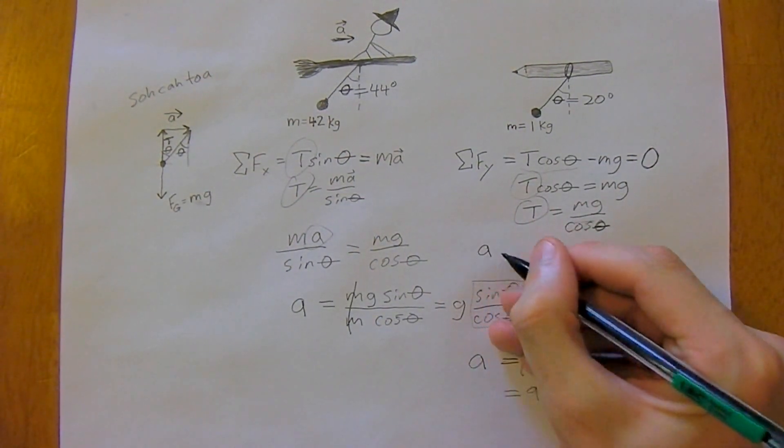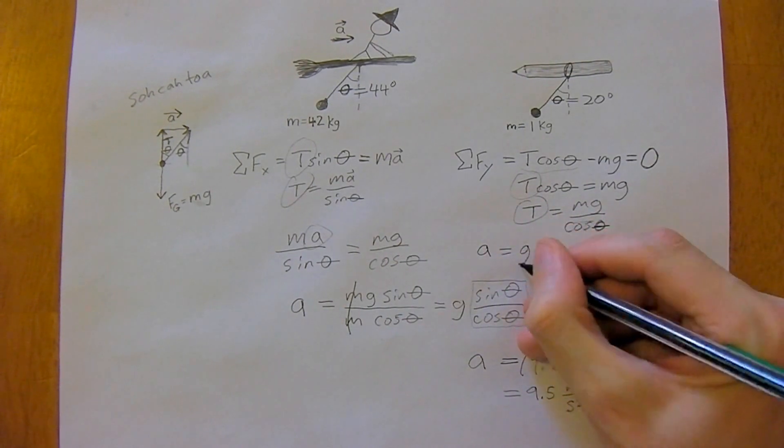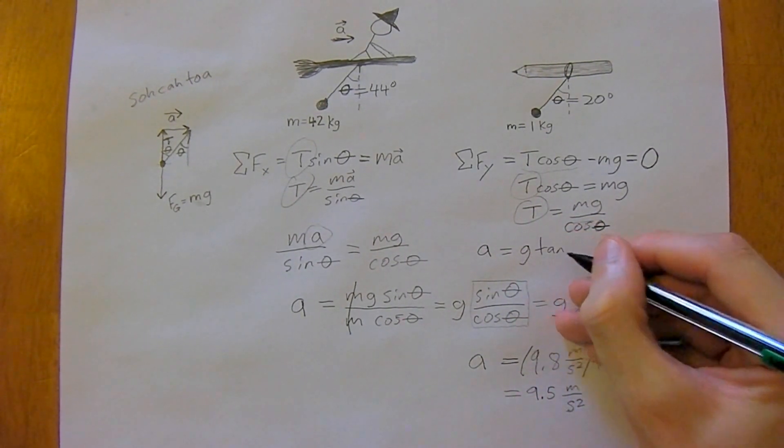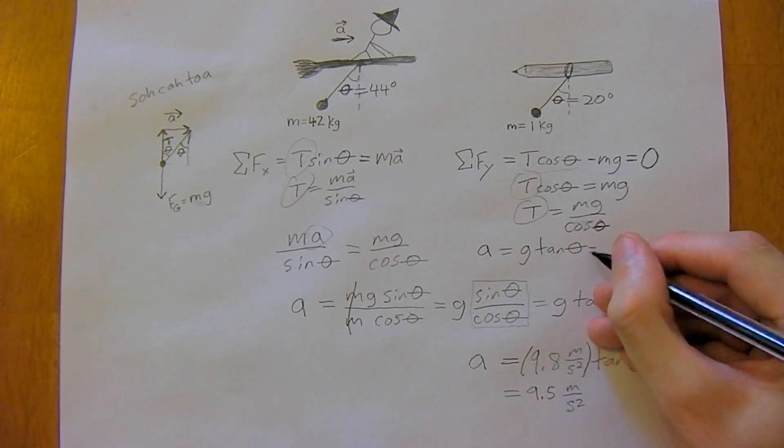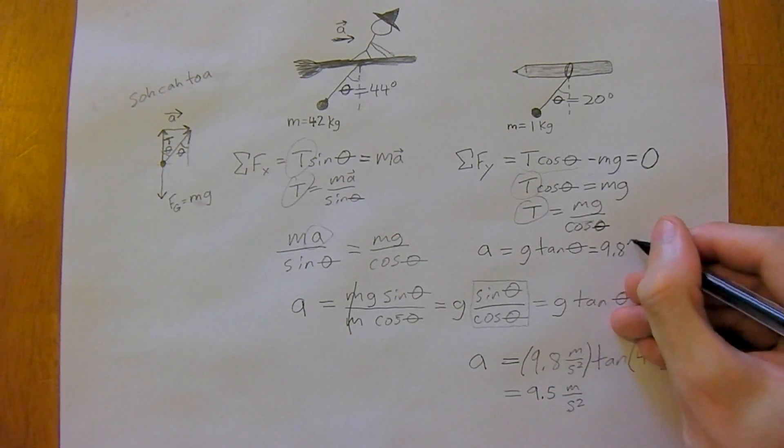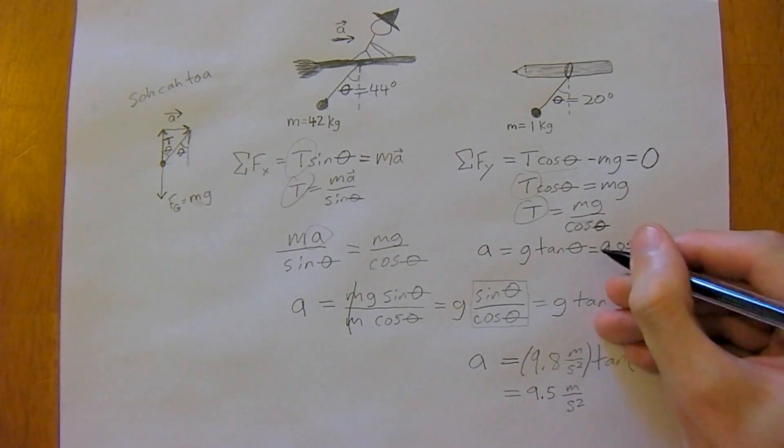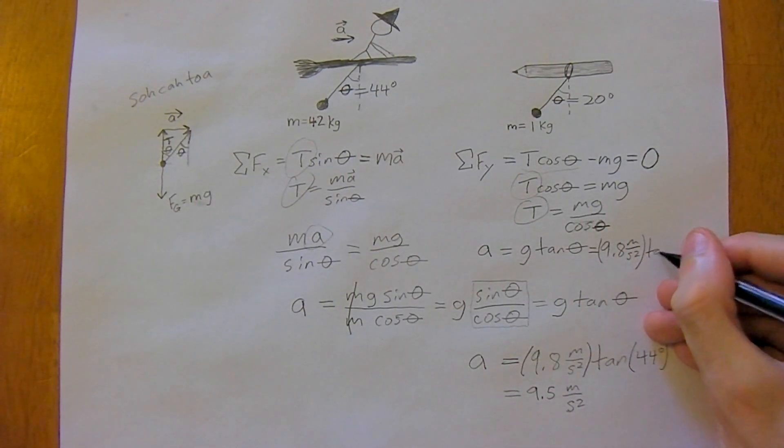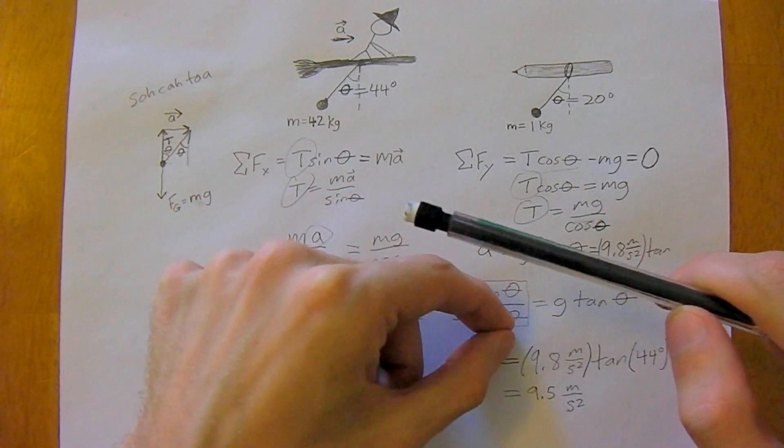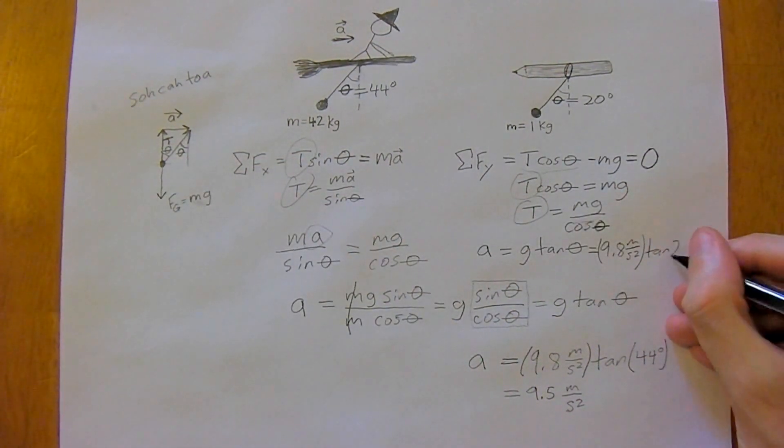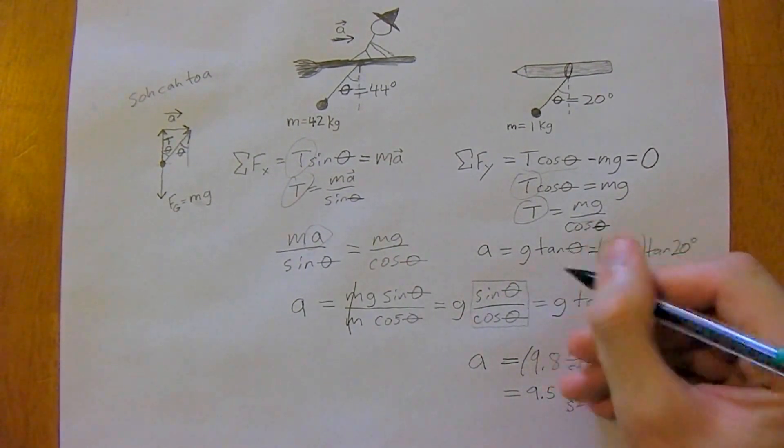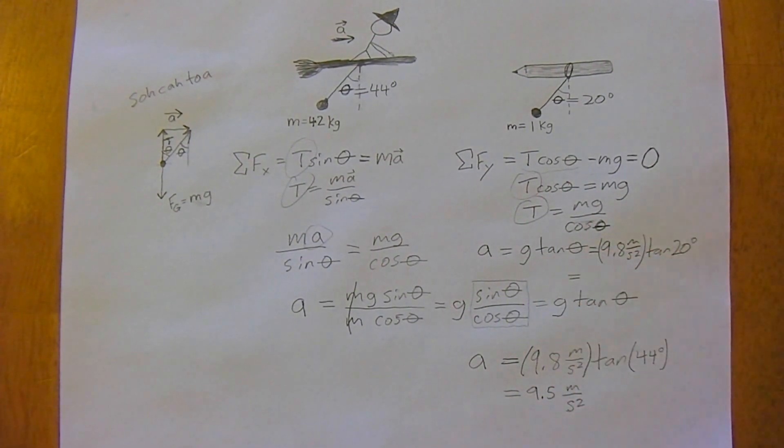Then you can actually figure out the acceleration of the train by just using what we already just worked out. Acceleration is going to be g times tan theta, which is 9.8 meters per second squared times tan of 20 degrees, and so the acceleration of the train would be 3.6 meters per second squared.